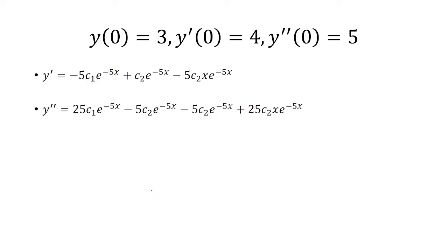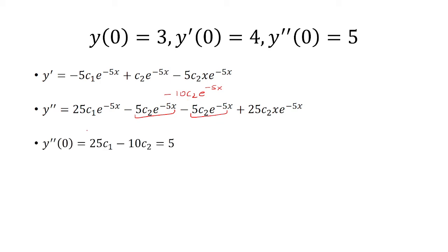Next, take the second derivative — these two terms can be simplified as negative 10c2 e to negative 5x. Plugging in x equals zero, this term becomes zero, and we're left with 25c1 minus 10c2 equals 5.